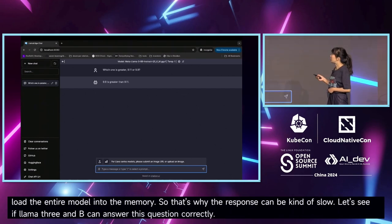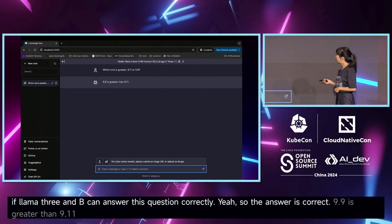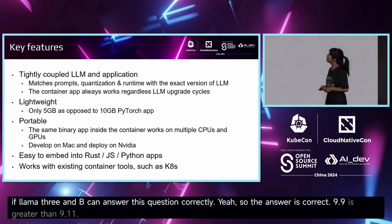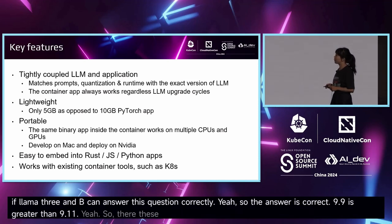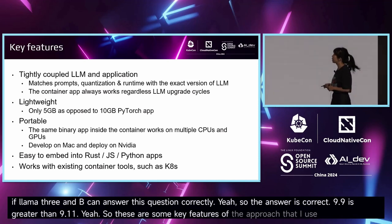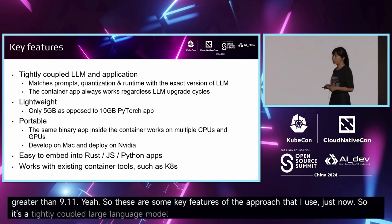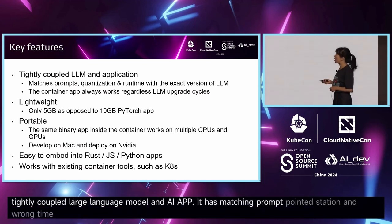The answer is correct — 9.9 is greater than 9.11. These are some key features of the approach I just used. It's a tightly coupled large language model and app, so it has matching prompt, quantization, and runtime — by runtime I mean things like llama.cpp.